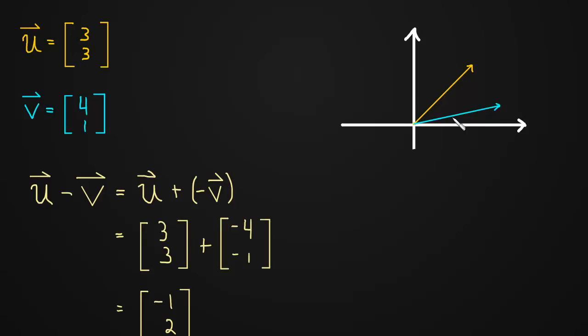So now let's take a look at that on a graph. Here we have v in blue and u in orange. And now we can graph negative v. So it's just v but pointing in the opposite direction.